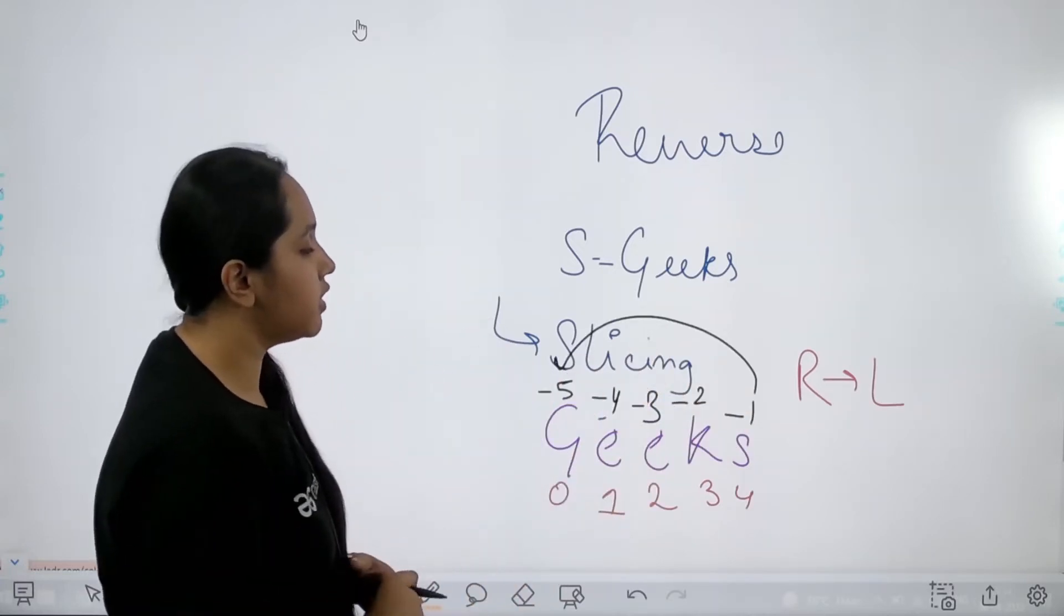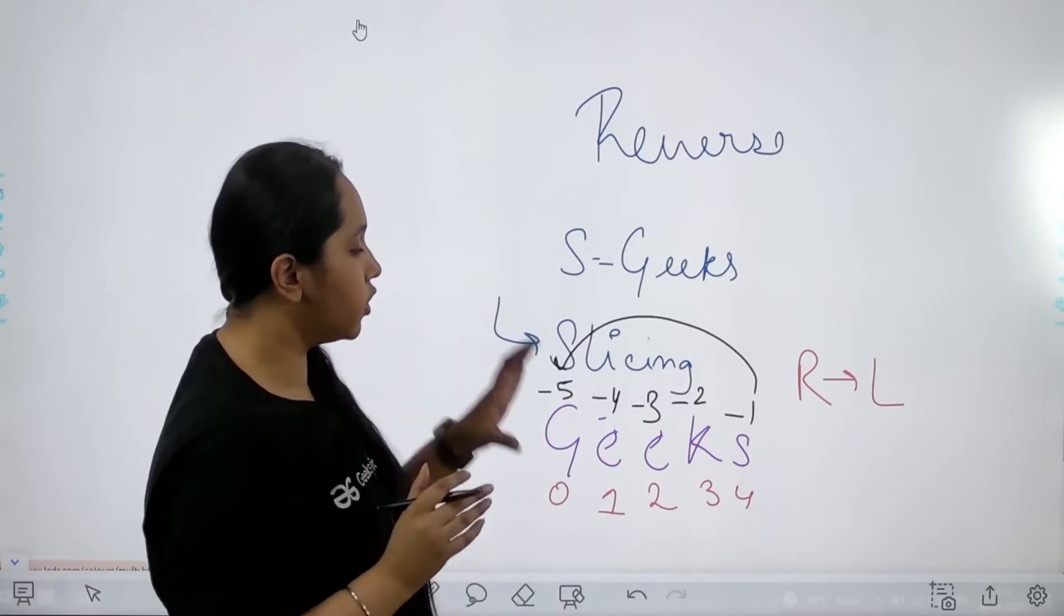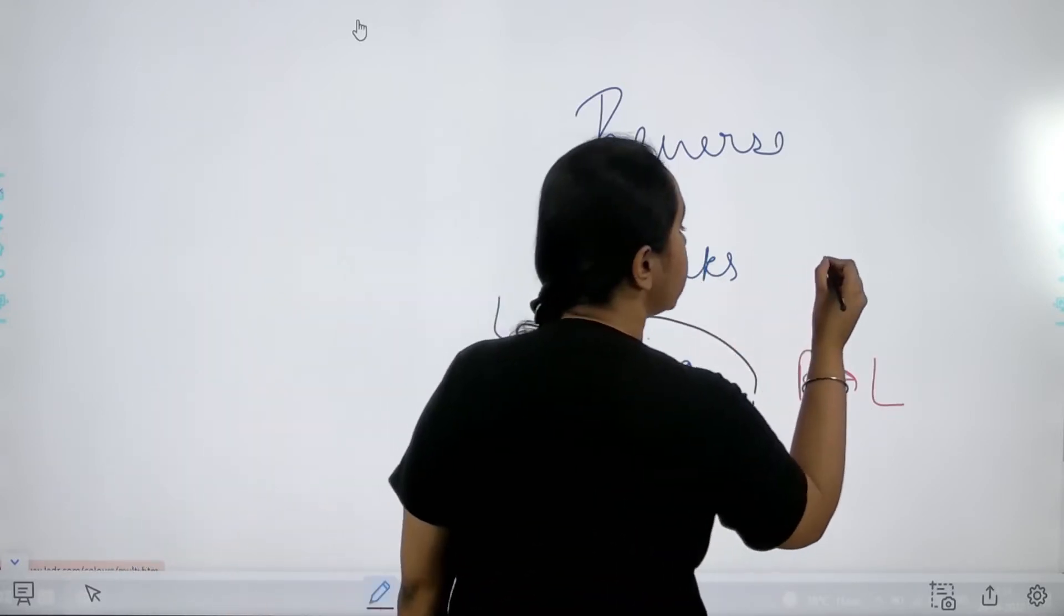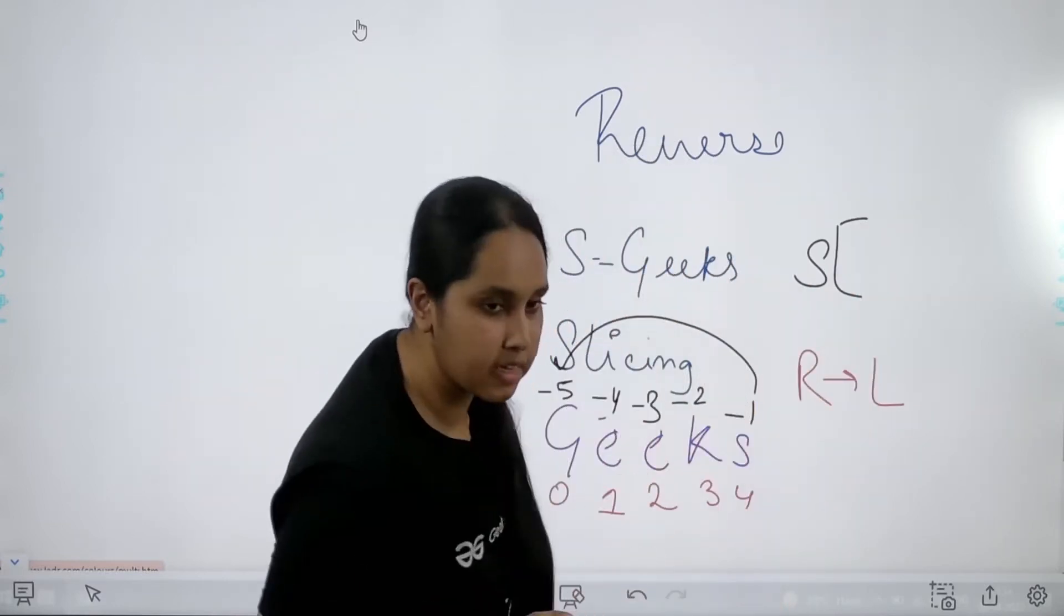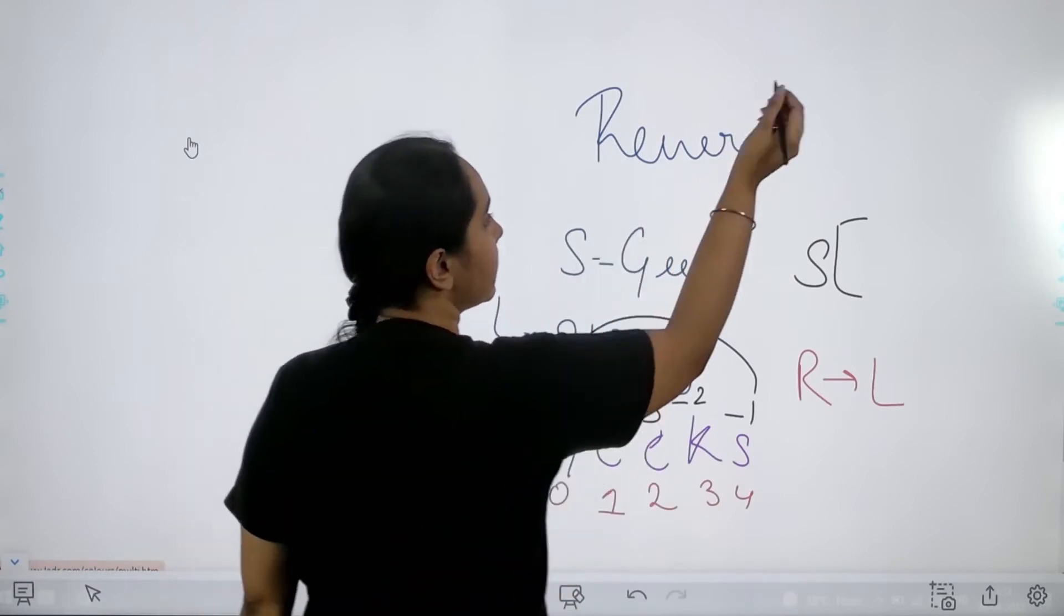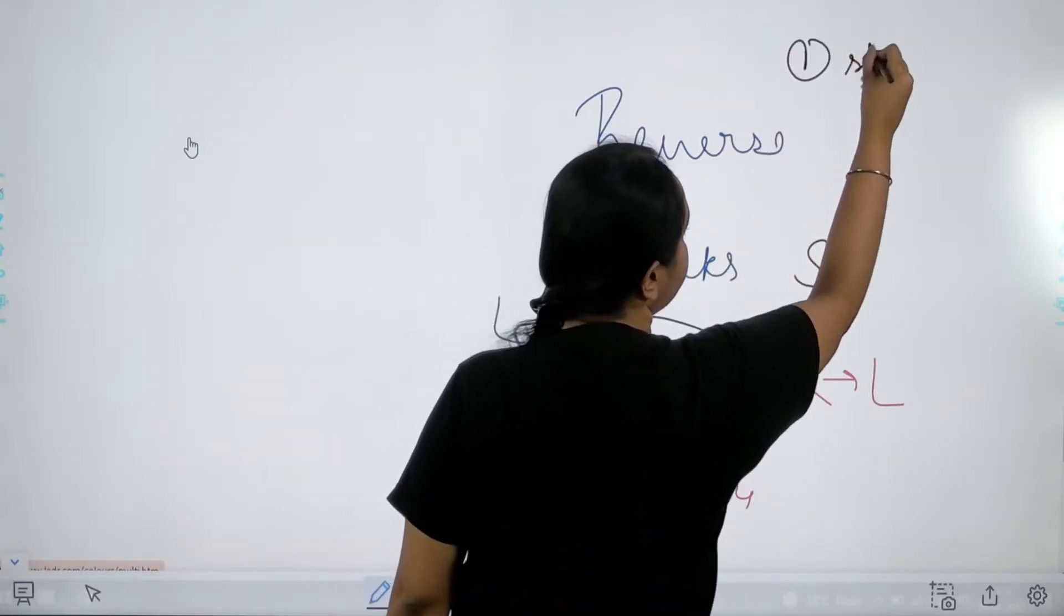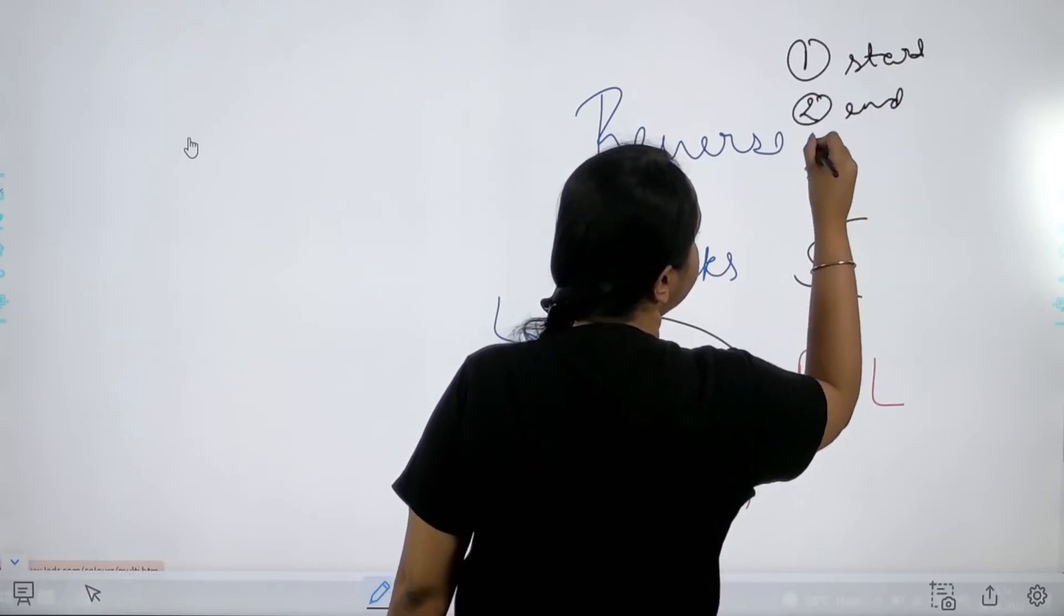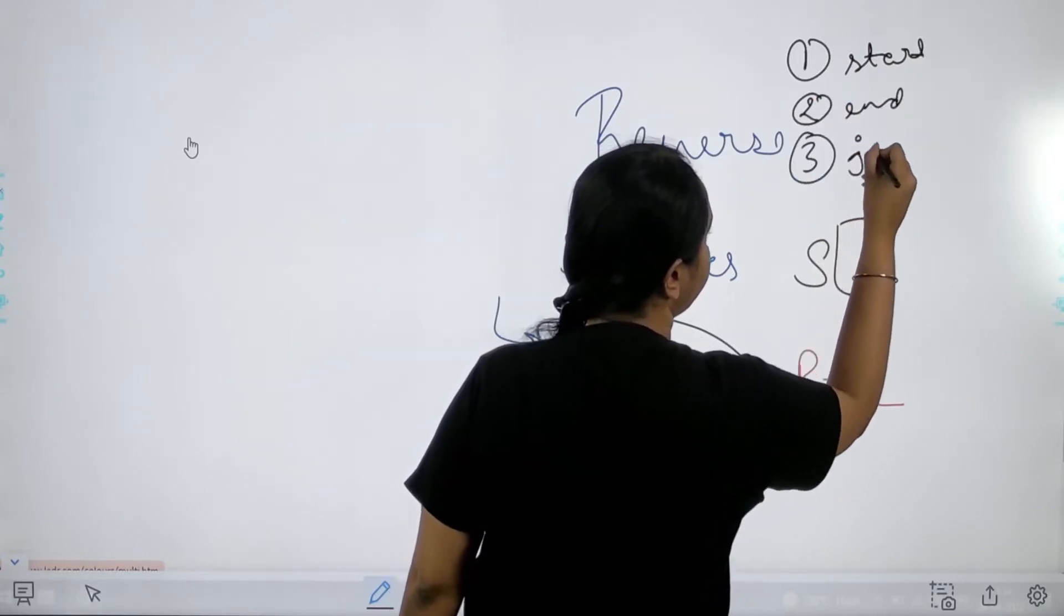This is the concept that I would be using. For directly reversing the string, what I can do is I can just say s, that is the string, and I need to do the slicing. For doing slicing I need three things. First is the start value, second is the end value, and third is the jump value.